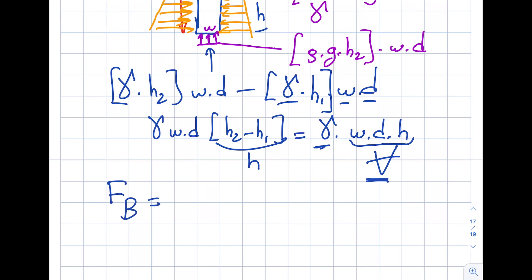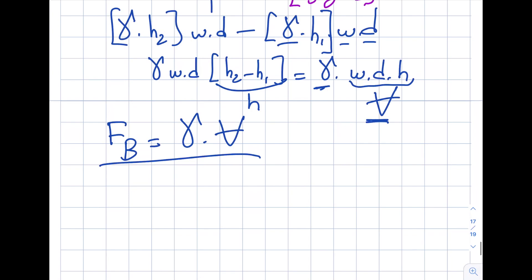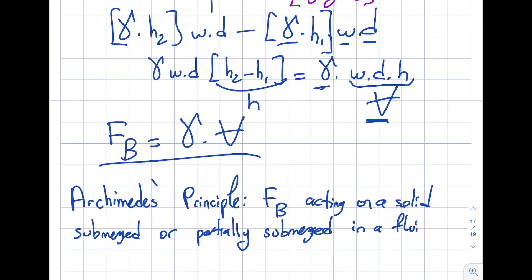So as you can see here, this buoyant force becomes specific weight of the fluid times the displaced volume. You can see from here we derived it for you. But if you want to write it, basically what I just said is the Archimedes, it's a Greek scientist, principle. Basically, what he says is the buoyant force which is the FB acting on a solid submerged or partially submerged in a fluid is equal to weight of the displaced fluid.